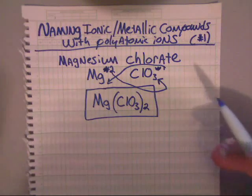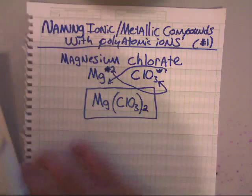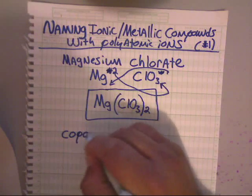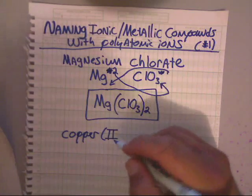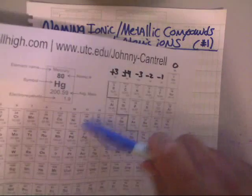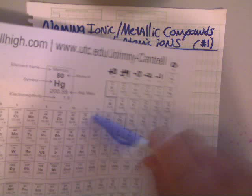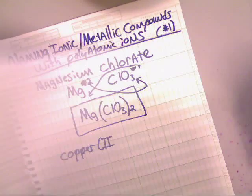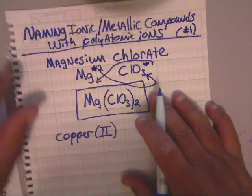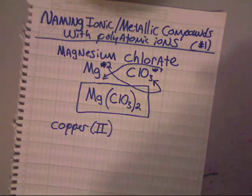Now let's say you had something not as easy. Let's say someone gave you copper two. This time I'm using something from the transition metals — Cu, it's in the D-block. So I'm going to look on the yellow sheet at the top for the ions to see if I can find copper two. And lo and behold, copper two is right here with Cu plus two. So we know it's definitely one of those that uses Roman numerals, as shown here.